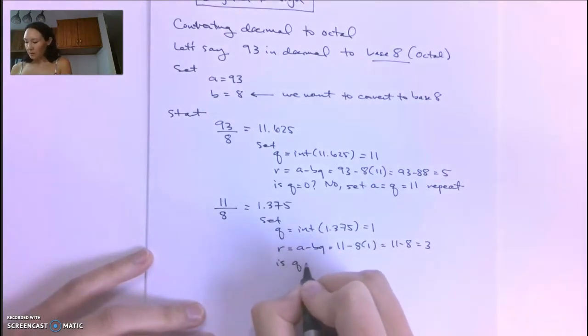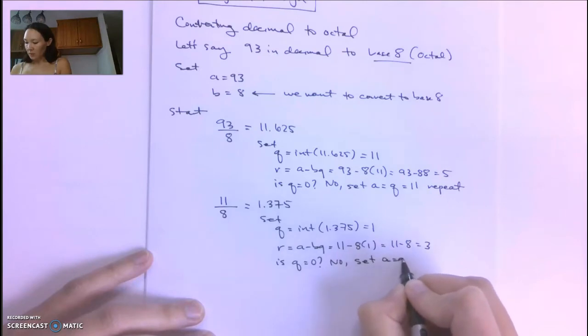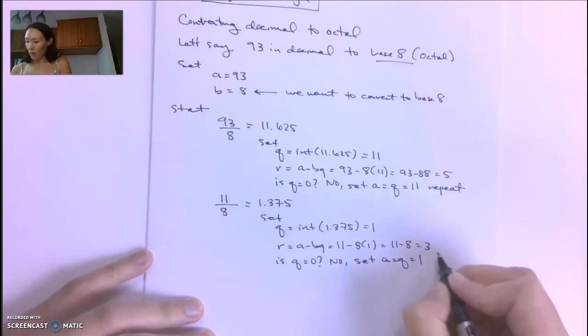Now we ask again, is Q equal to 0? Q is 1, so the answer is no. Again, we set A equal to Q, which is 1, and repeat.